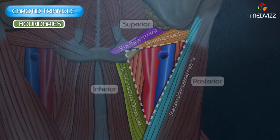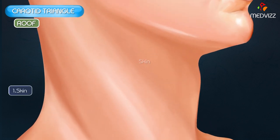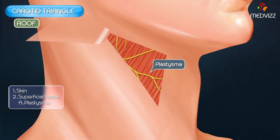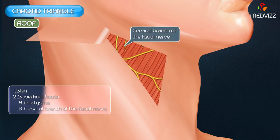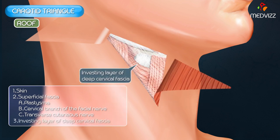The roof of the triangle is formed by the following structures from superficial to deep: skin, superficial fascia containing the platysma and the cervical branch of the facial nerve, as well as the transverse cutaneous nerve of the neck. After the superficial fascia, the next layer is the investing layer of the deep cervical fascia. These are the structures which form the roof of the carotid triangle.